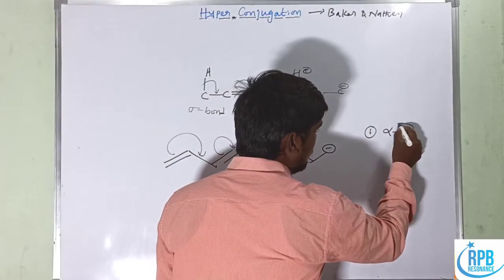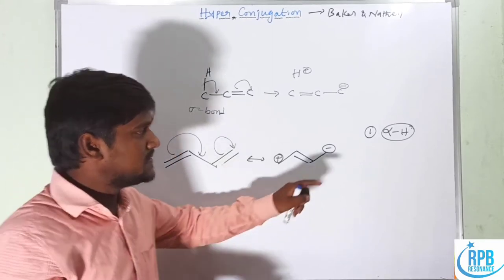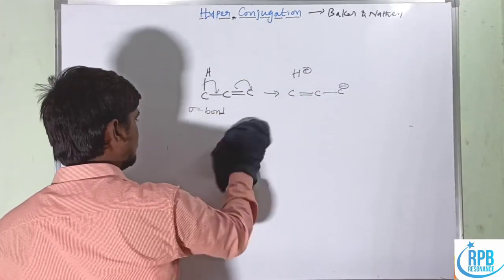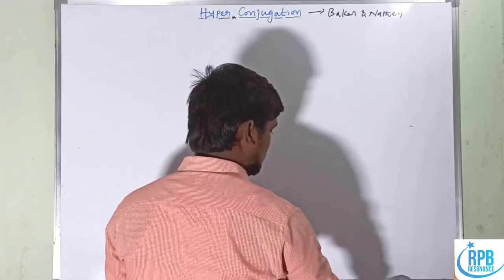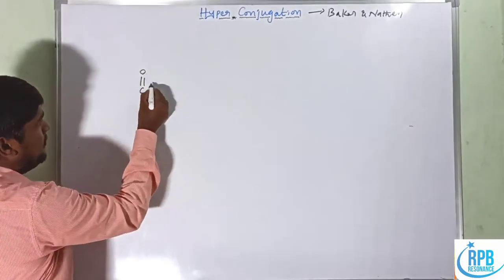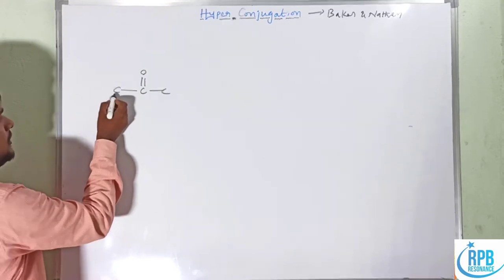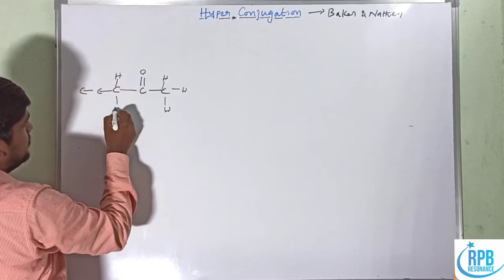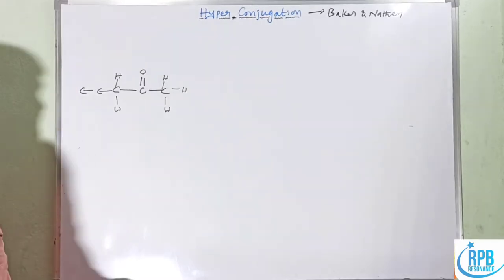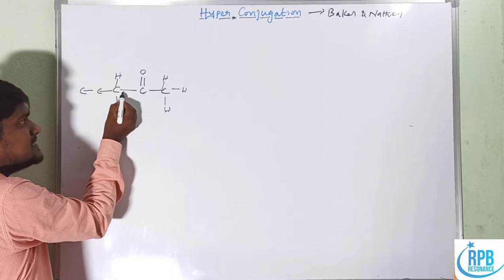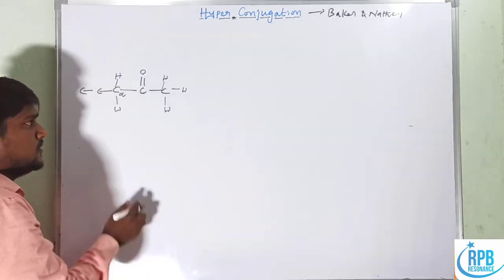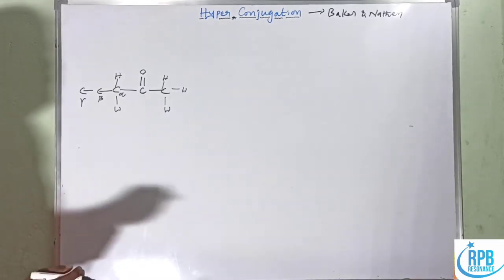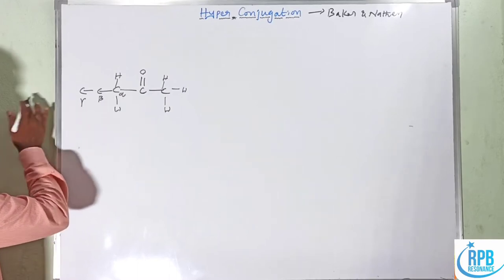The whole concept of hyperconjugation depends on alpha hydrogen. Now let's understand alpha hydrogen identification. Consider a carbonyl compound — either aldehyde or ketone. The carbon adjacent to the carbonyl group is called the alpha carbon. The next carbon is beta, then gamma, then delta, and so on.